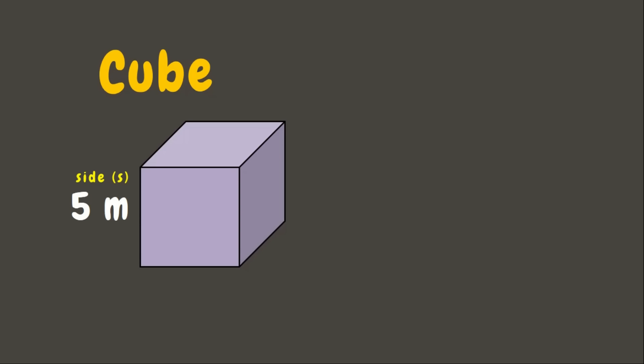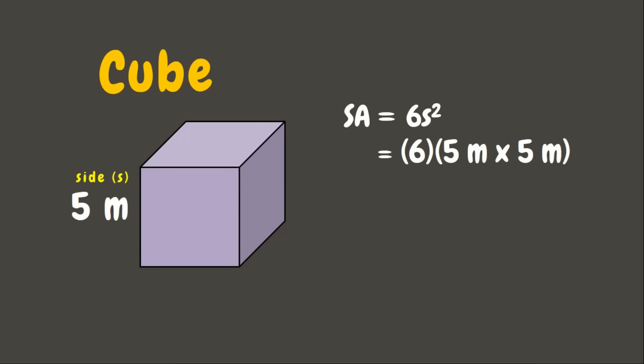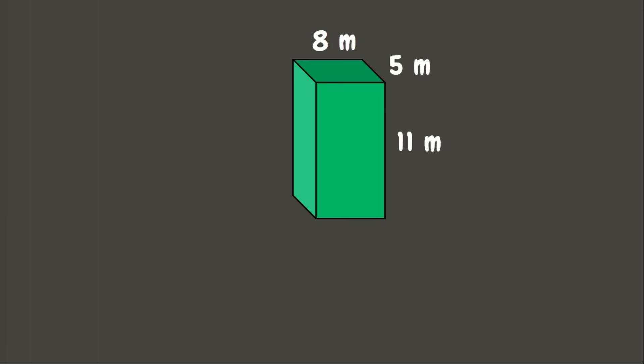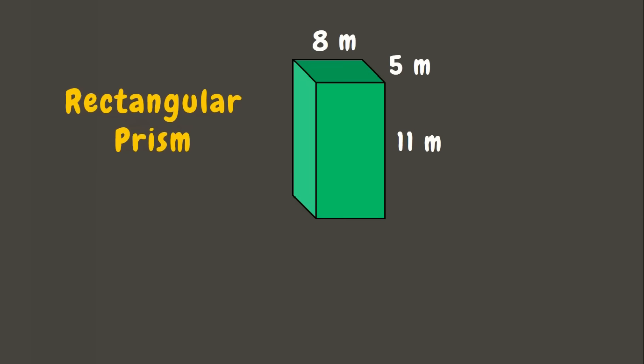To get the surface area of a cube, we are going to use the formula six times s squared. So that will be six times the square of the side, which is five meters. Five meters times five meters — six times 25 square meters is 150 square meters. This is the surface area of this cube. Great job!